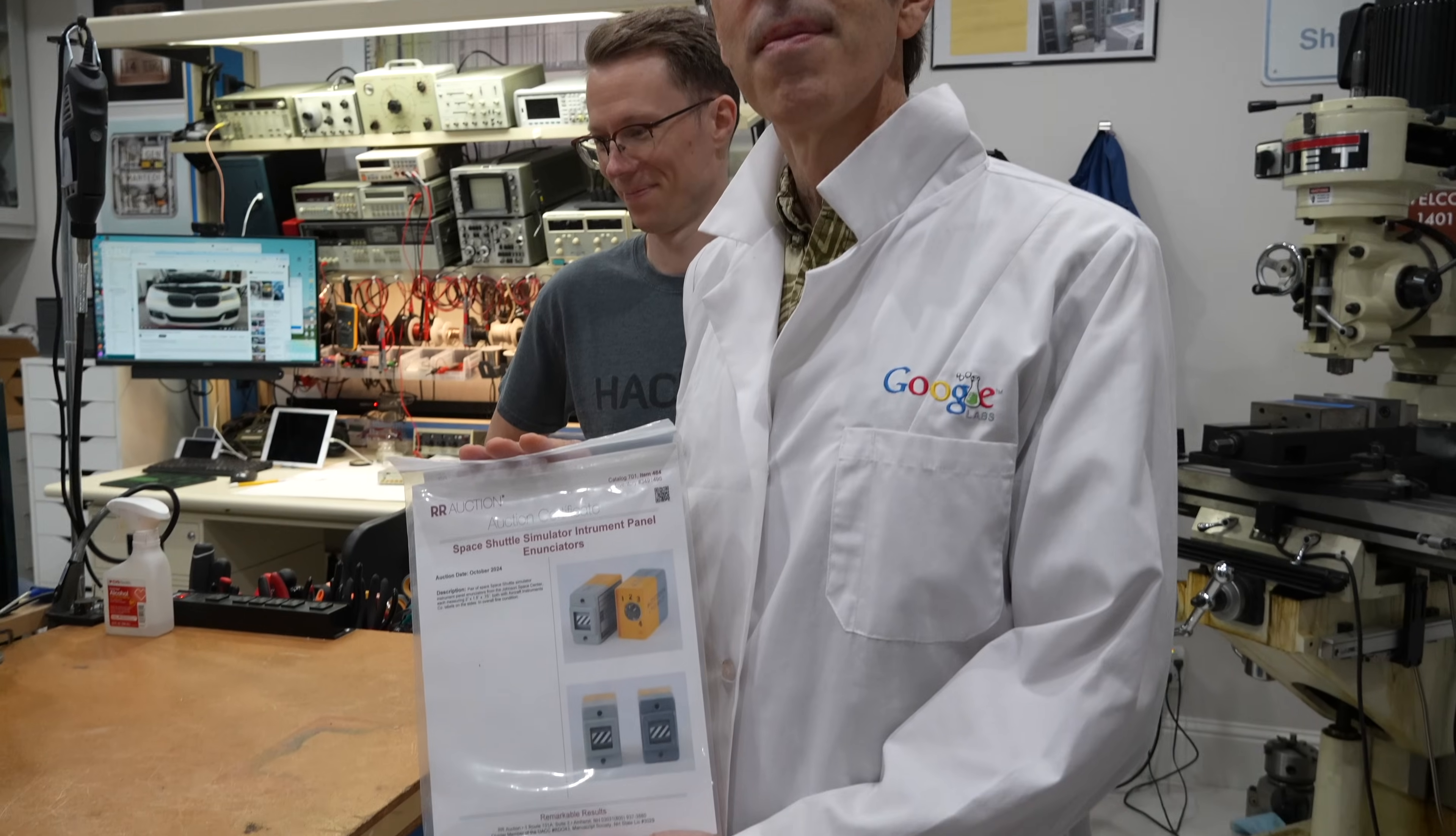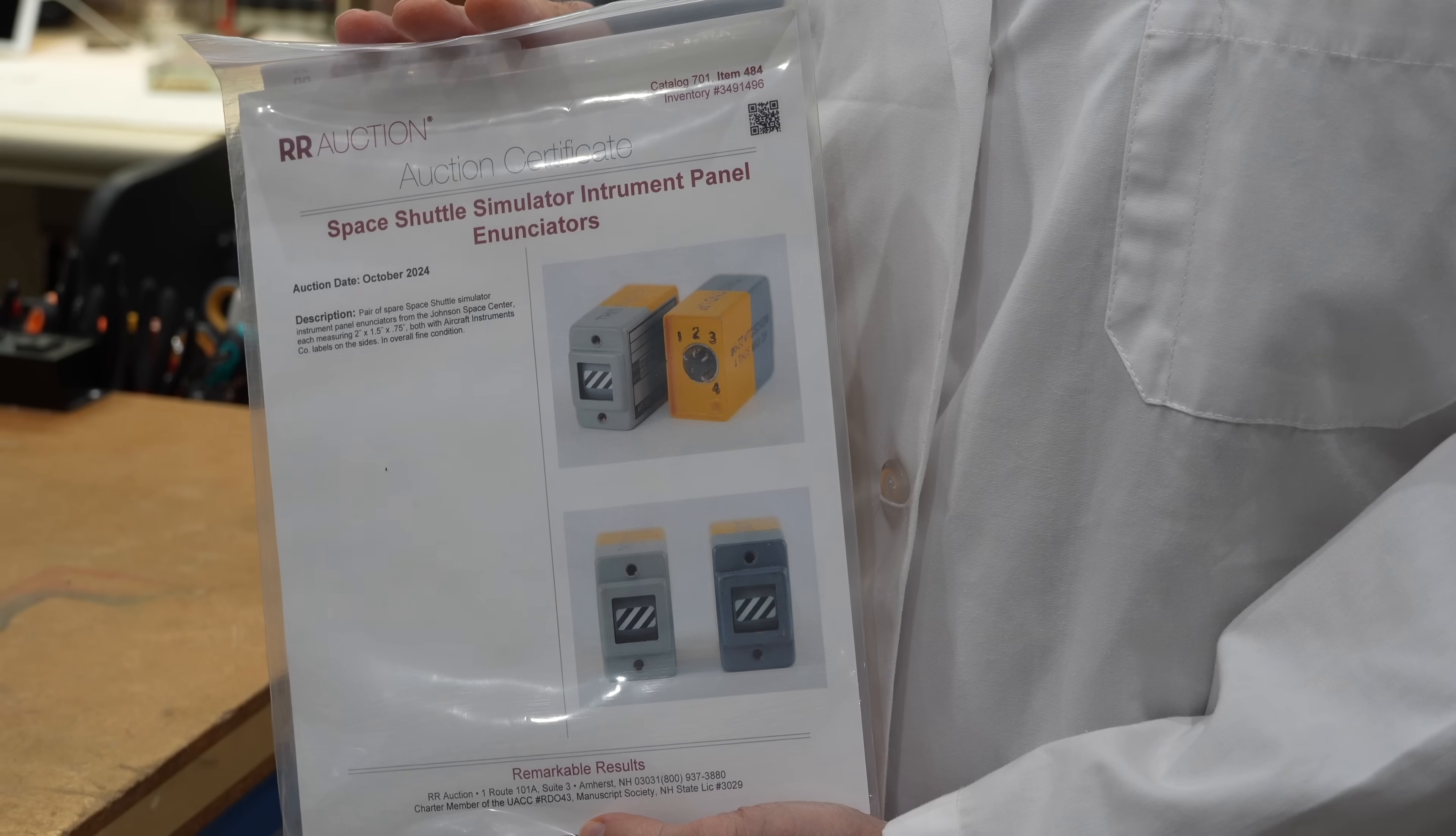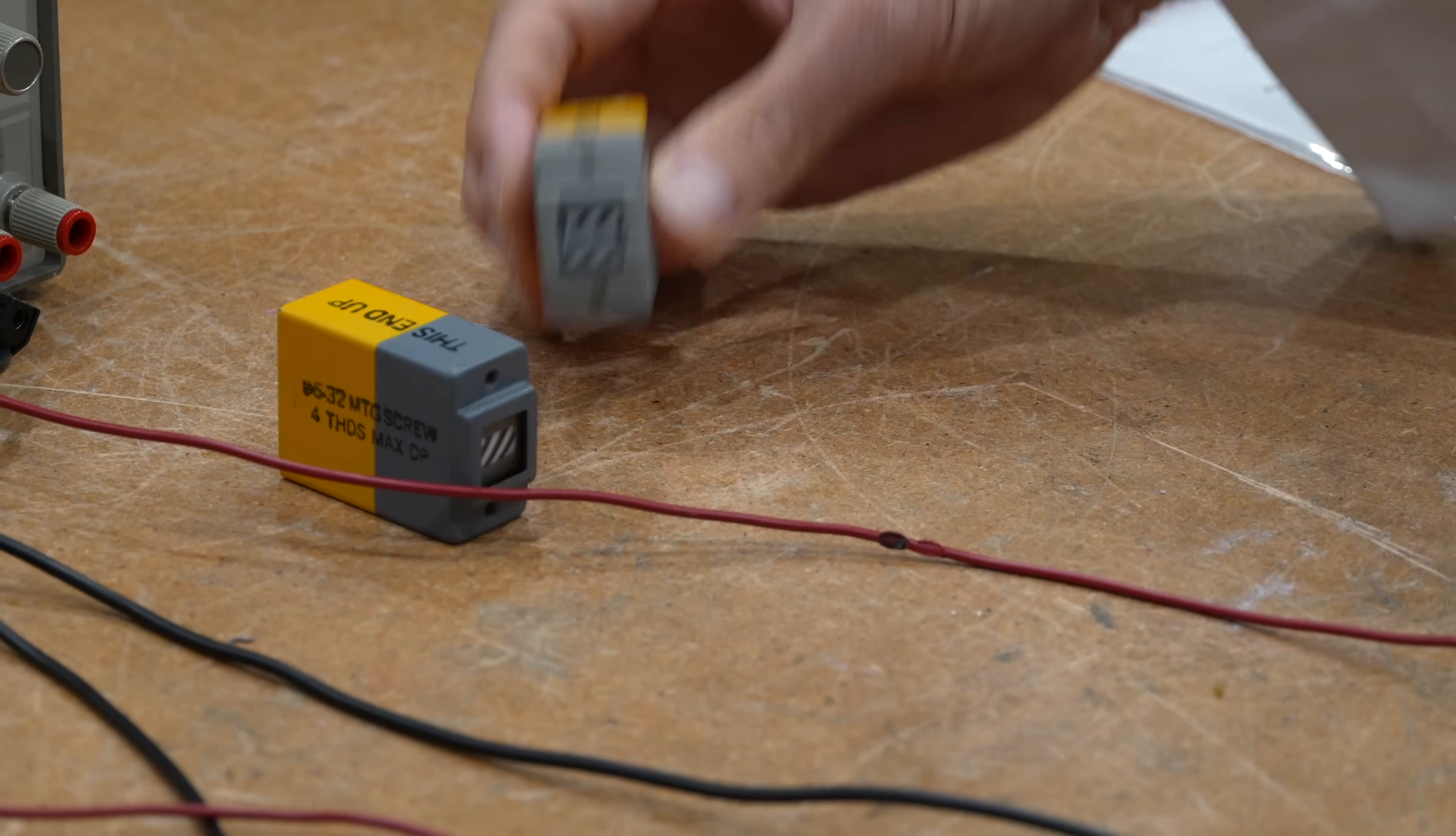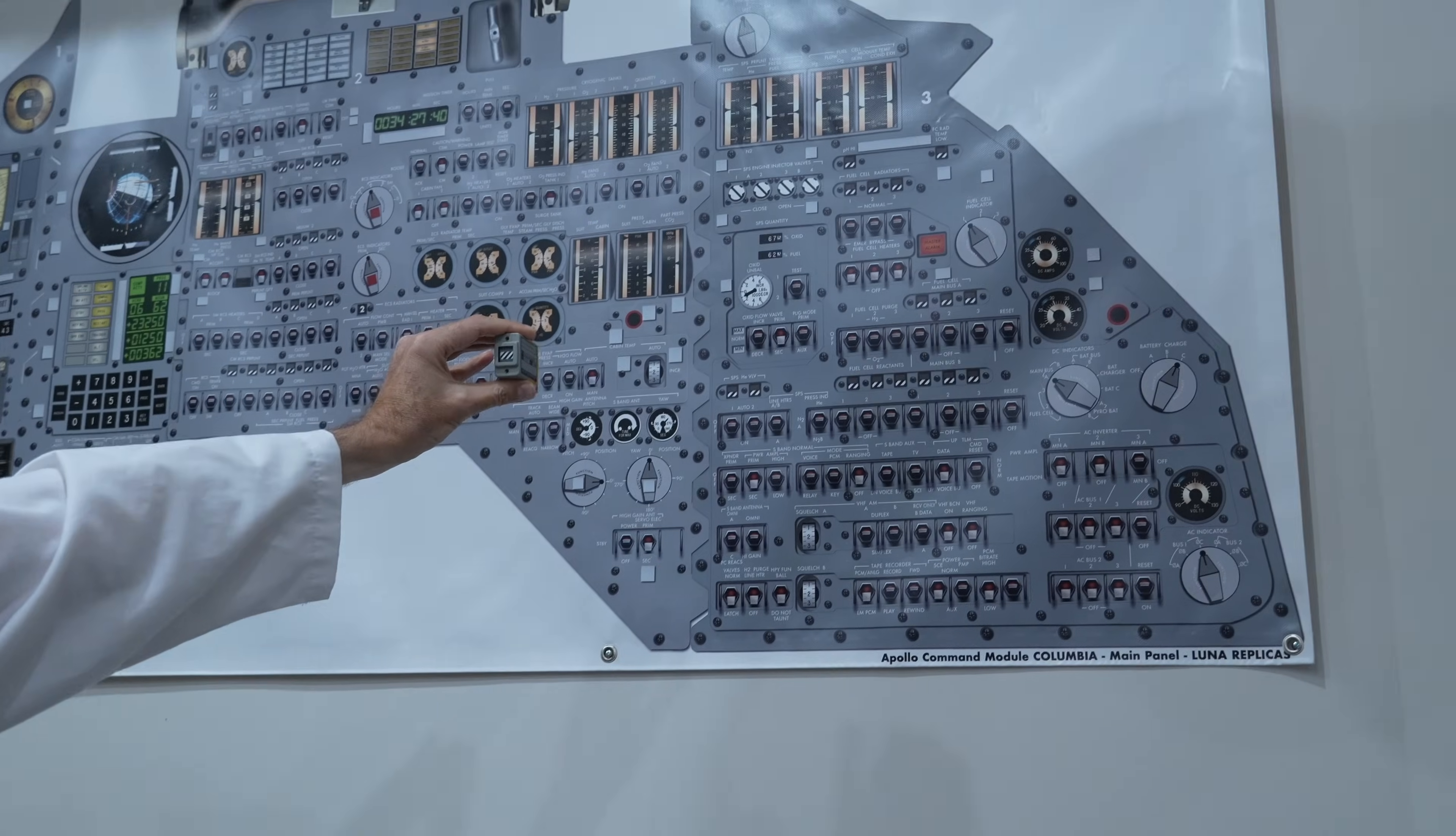We have a simple one today. I went shopping at RR auction, and I was the only one to bid on the Space Shuttle Instrument Panel Enunciator, which I think is the same switchgear as they use in Apollo. And here they are. So I call them barber pole indicators. Those ones, the stripes are in the bottom half, and this one the stripes are in the middle, so it looks a little different.